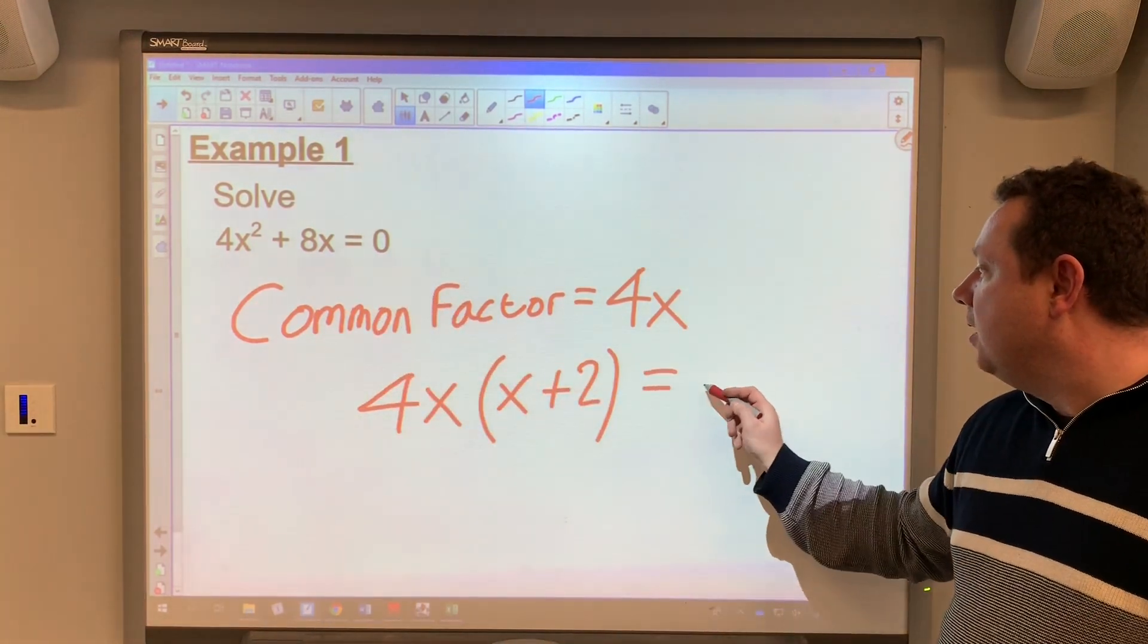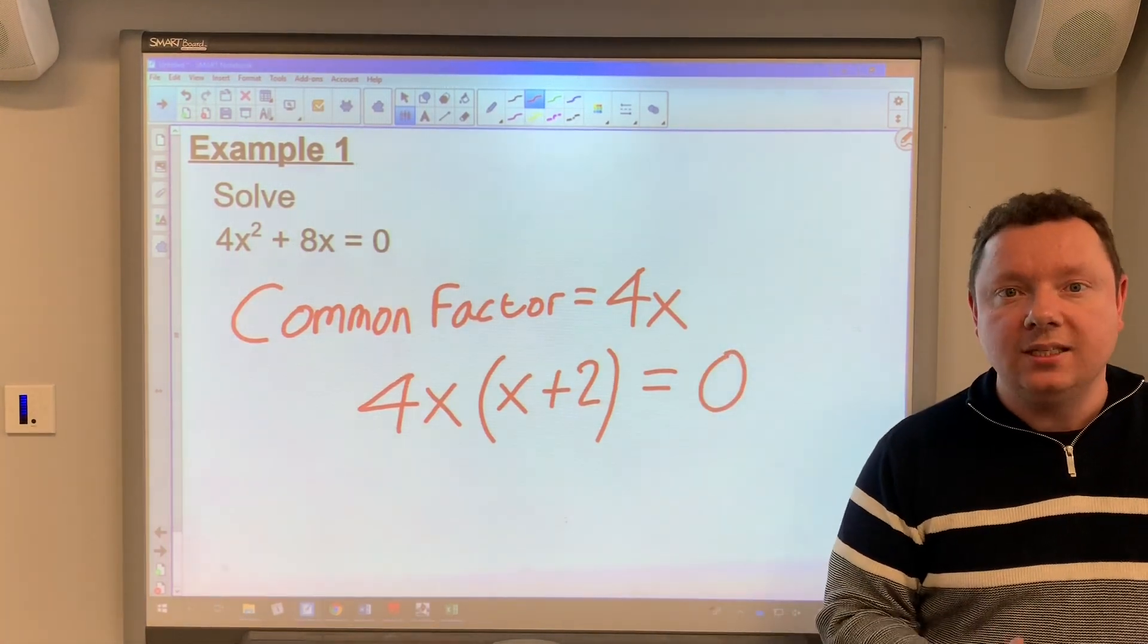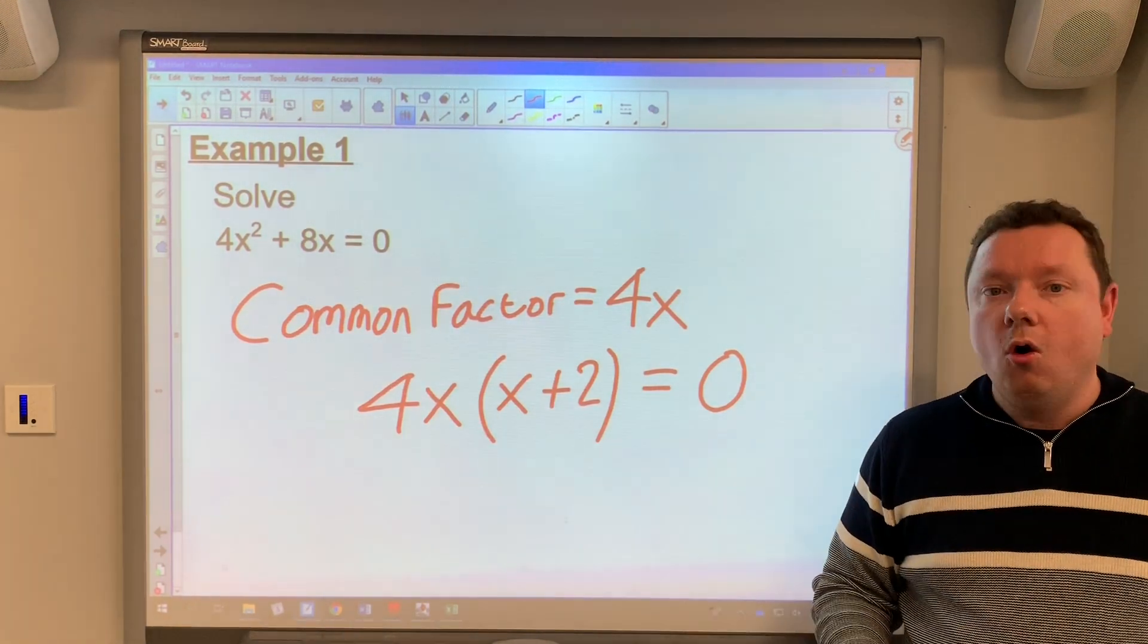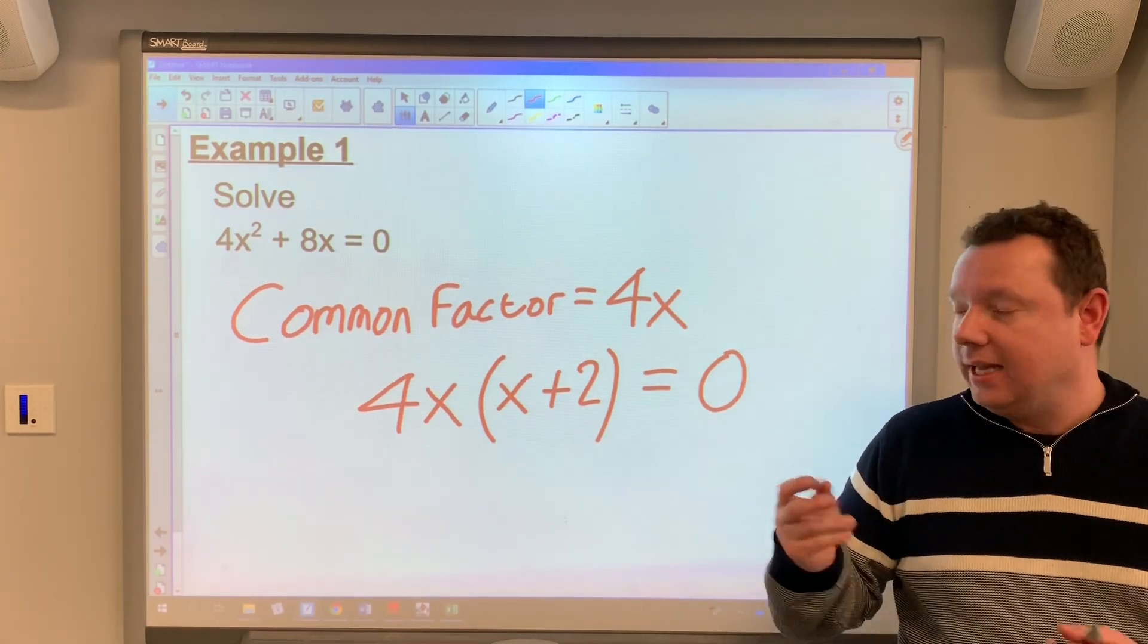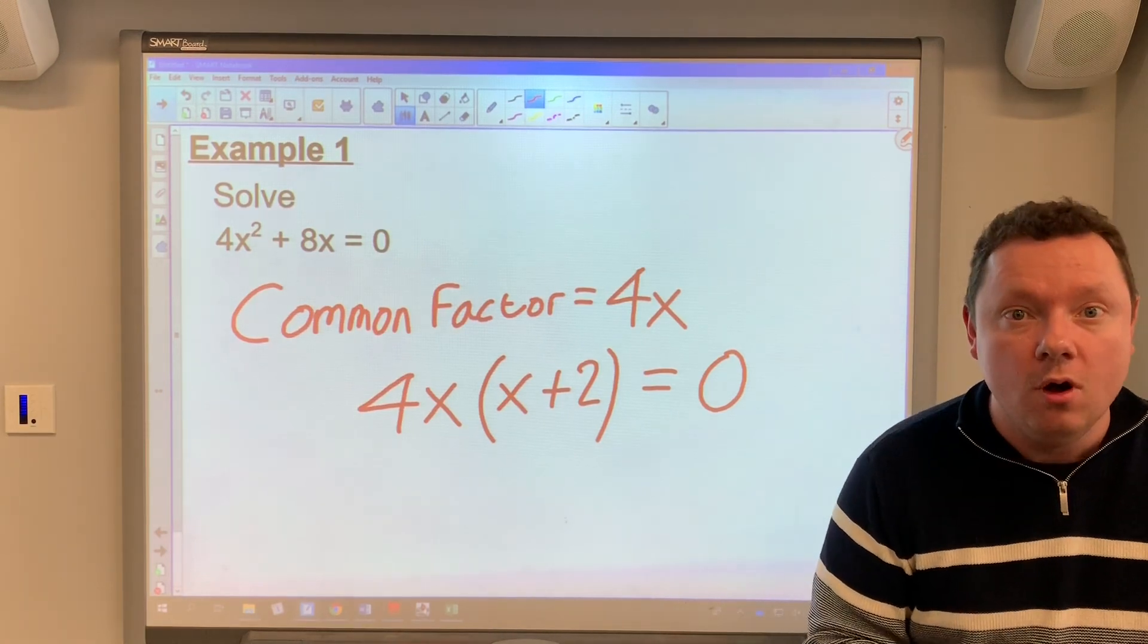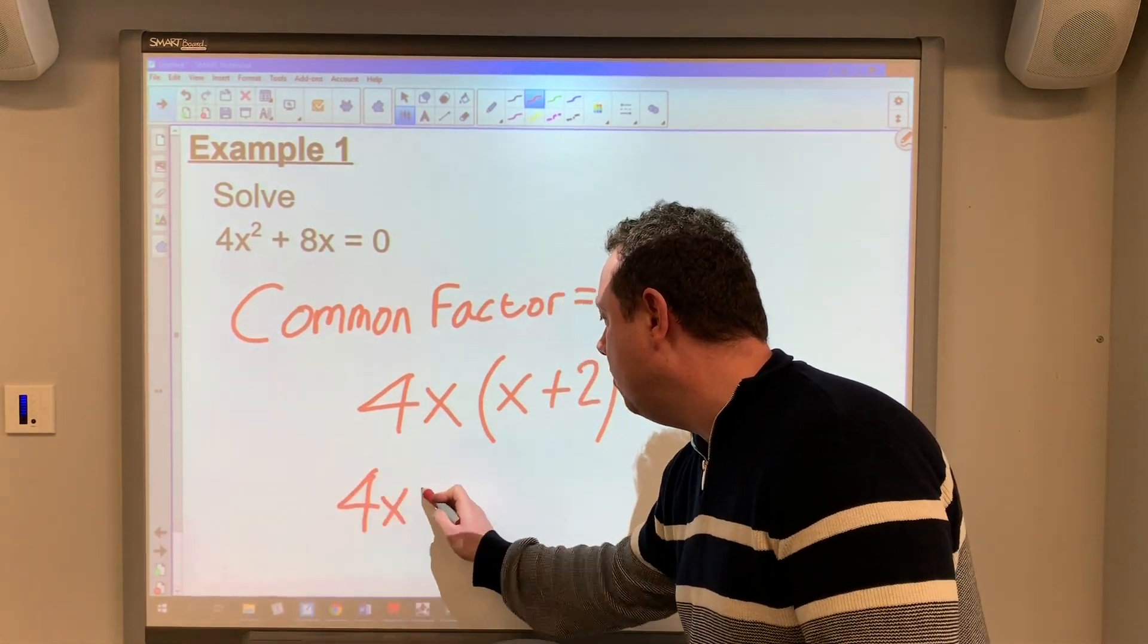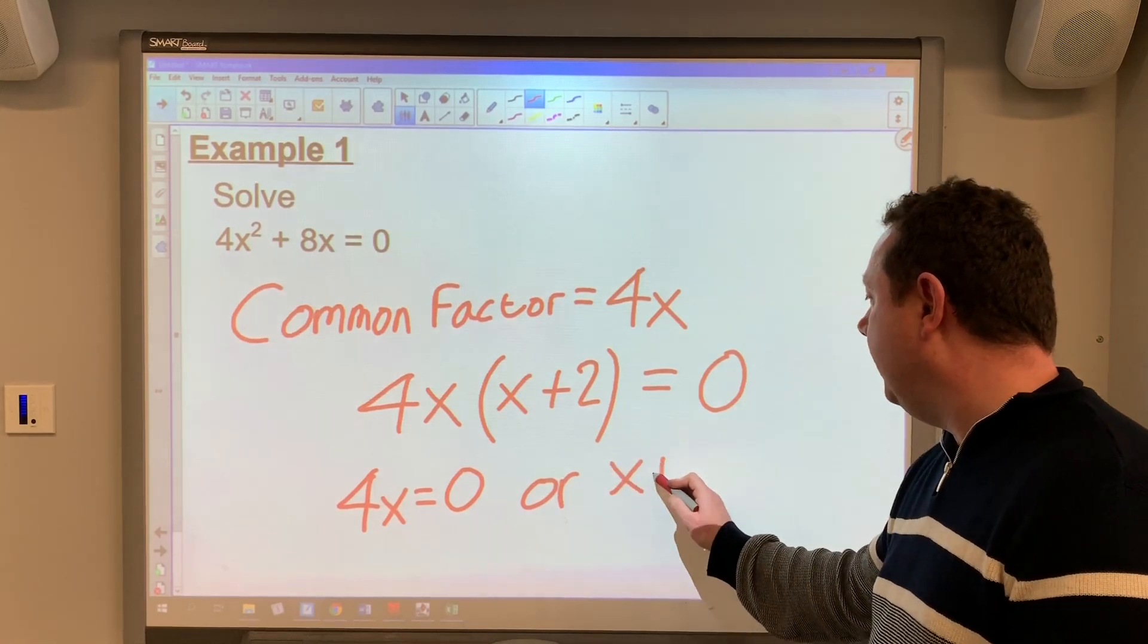So I've got 4x(x + 2) = 0. I've pretty much solved my quadratic now because either 4x = 0 or x + 2 = 0. One of them has to be zero because you're timesing two things together. And if you're times two things together and you get an answer of zero, obviously one's zero.